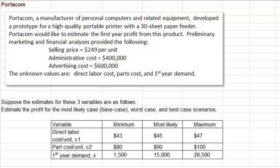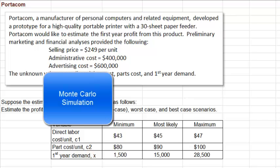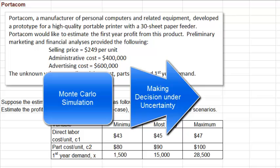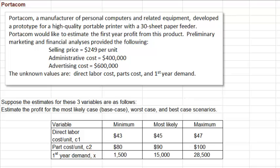We are going to concentrate on a simulation called Monte Carlo simulation. Monte Carlo simulation is used to make decisions in situations where there is a lot of uncertainty. You might recall in project scheduling, when you don't know how long each activity will take, you come up with three possible times for each activity — the shortest possible time, the longest possible time, and the most likely time. From this, and assuming each activity time has a beta distribution, we could estimate the probability of finishing by a certain deadline. We do something similar in Monte Carlo simulation.